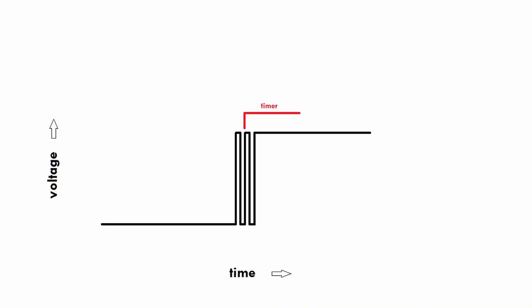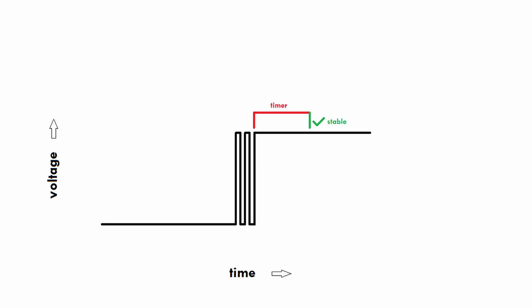Then the voltage comes back up, so we start the timer again. But once again, way before the timer ends, the voltage goes back down. So we scrap this one as well. Eventually, the voltage goes up and this time it stays up, the timer runs out entirely, and once the timer completes — one millisecond — then we say: the signal has been up for the entire one millisecond, now we consider it stable, and we register this as the button having been definitely pressed. So we're just filtering out signals based on time duration — the signal has to last at least one millisecond before we register it.